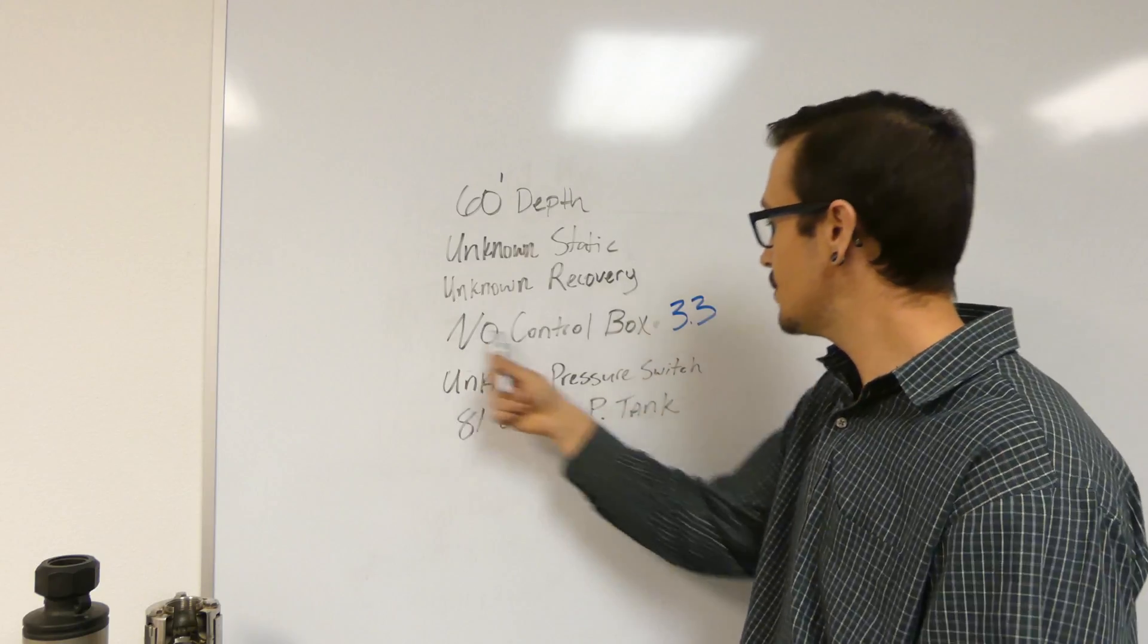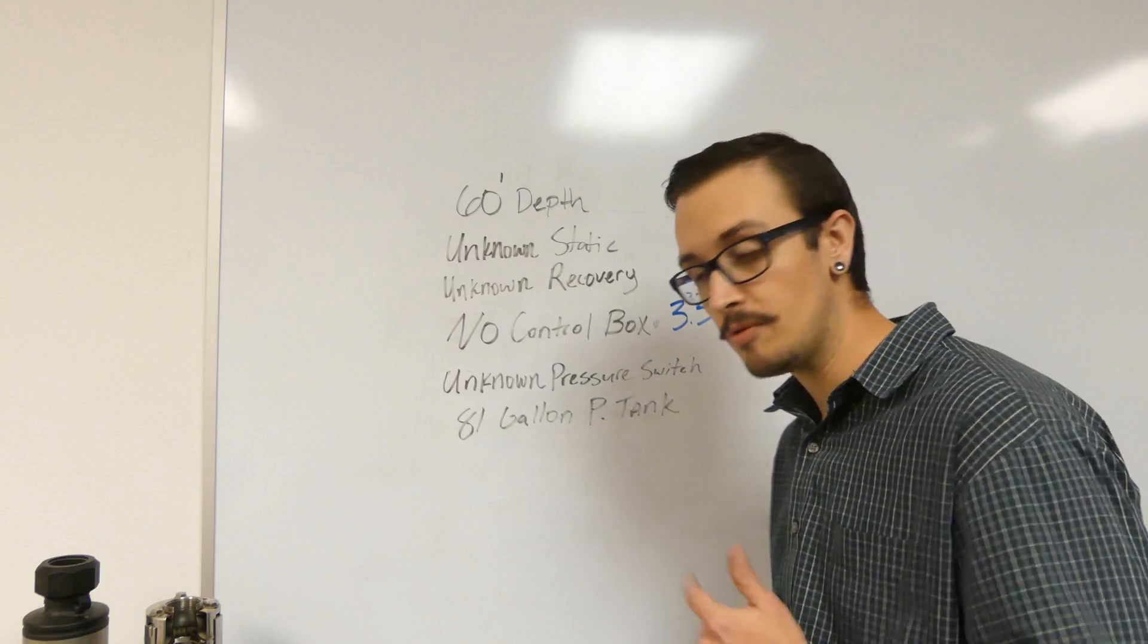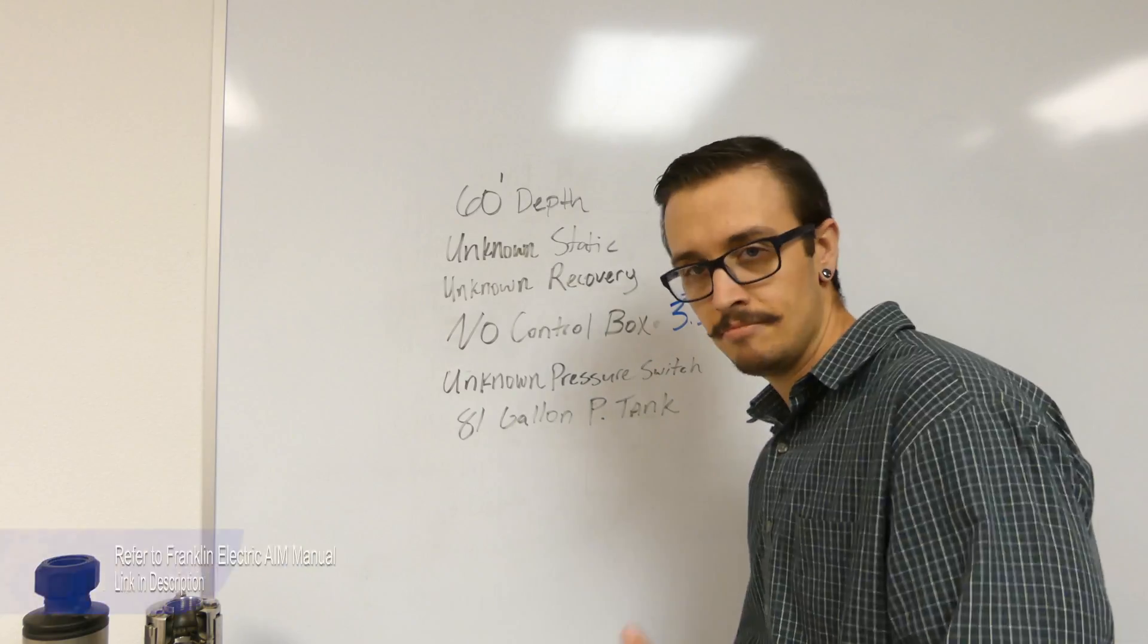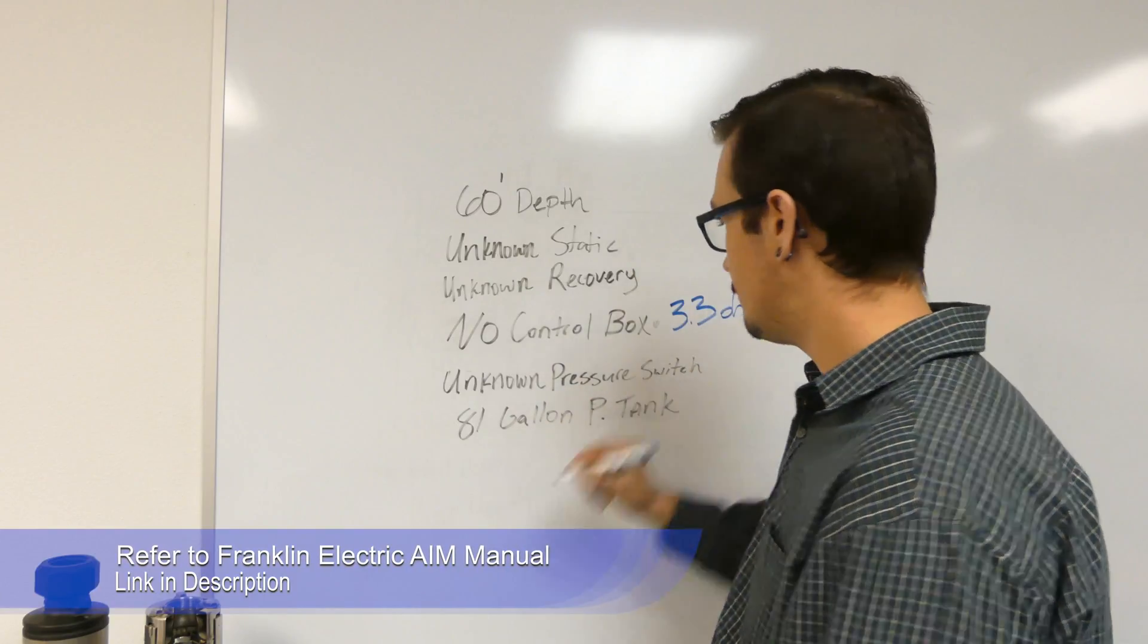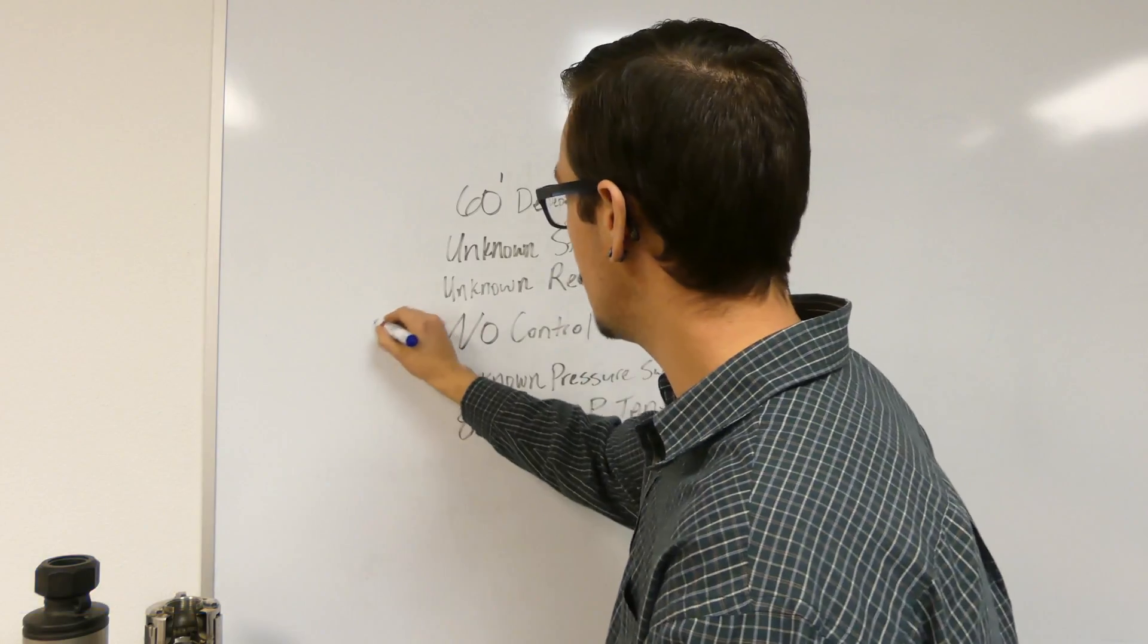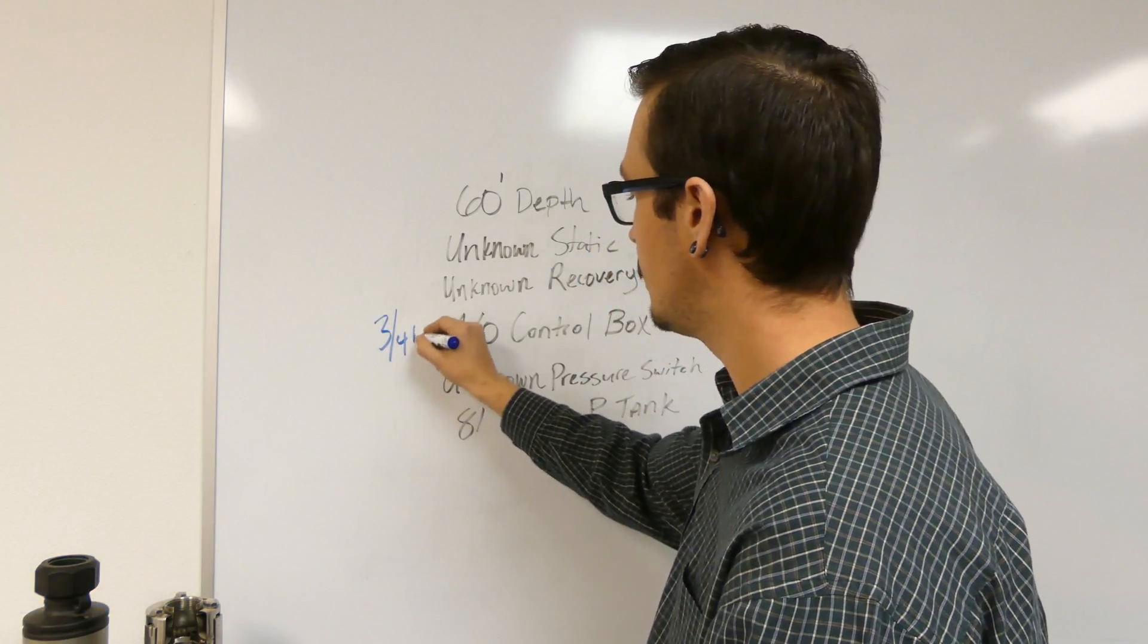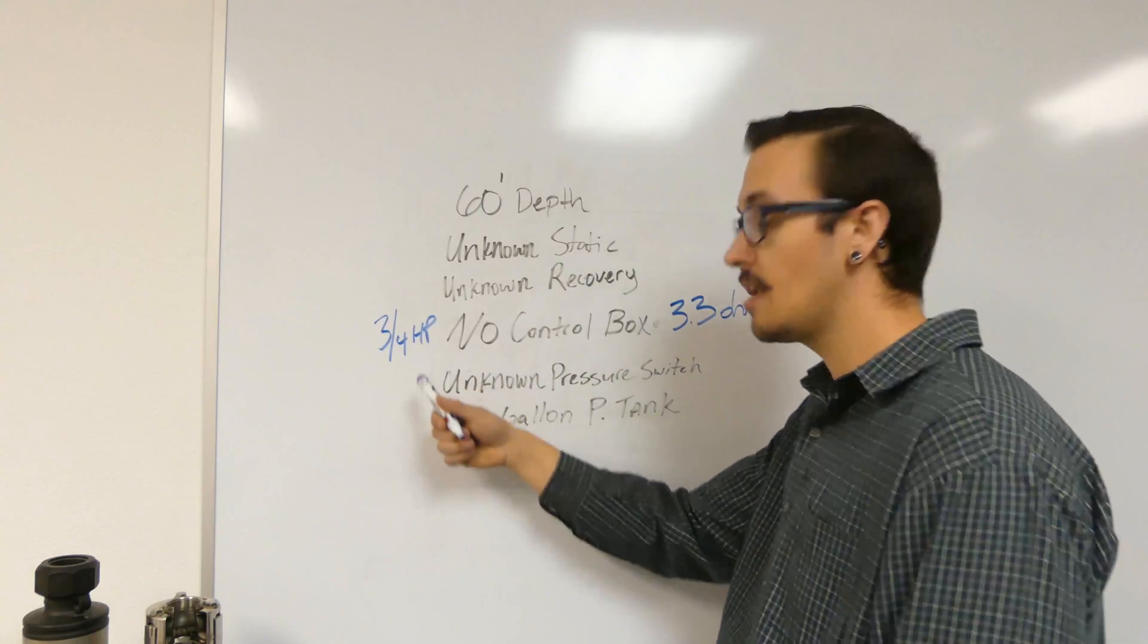No control box, but we took a resistance reading, we got 3.3 ohms. Refer back to that chart in the first section of the video - that means that we have a three-quarter horsepower. So now we know this, and we can assume that with a pretty good level of confidence.